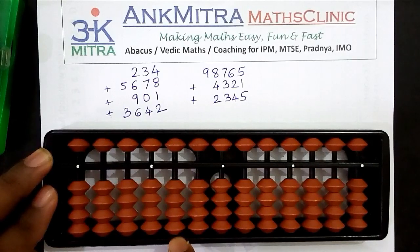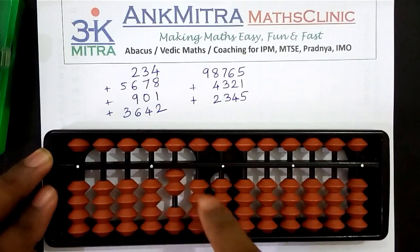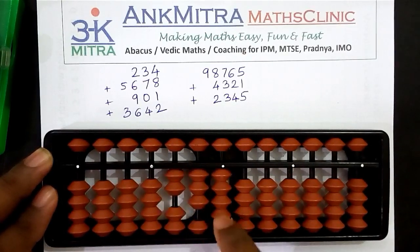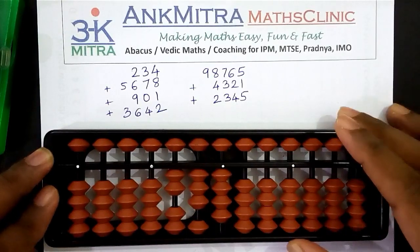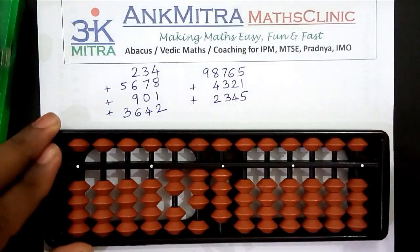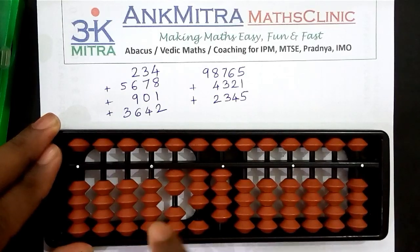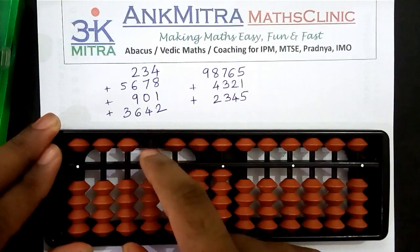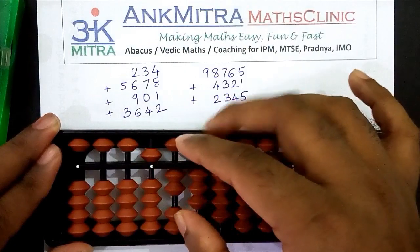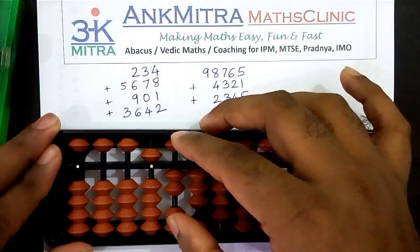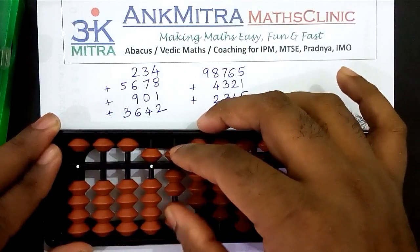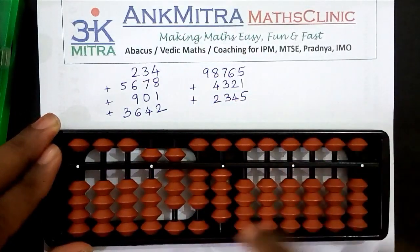Let's start with the first number, that is 234. It will start on the hundreds place, that is the third rod — so two, three, four. The next number is five thousand six hundred and seventy-eight, so it will start on the thousands place. Five thousand, six hundred — for addition of six I will add five and one, so six is done.